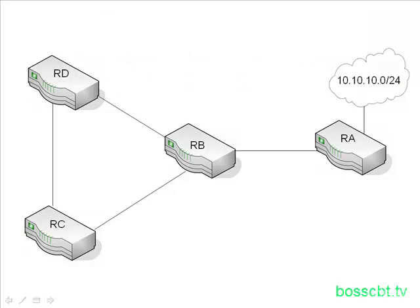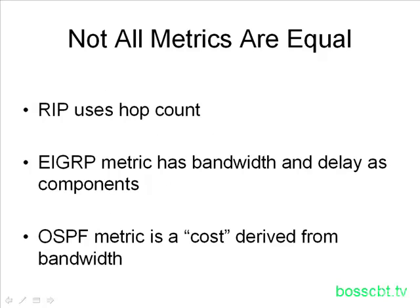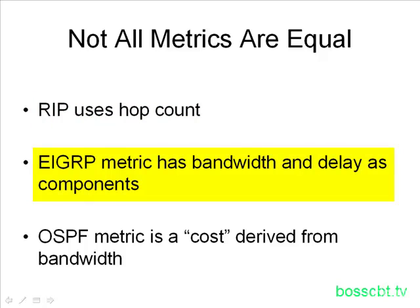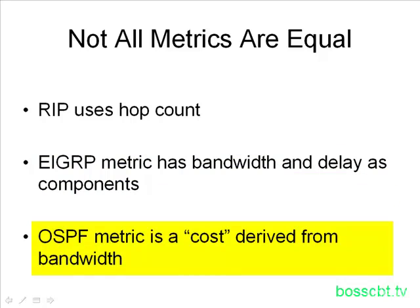Not all metrics are equal between routing protocols. Comparing the three protocols mentioned: RIP uses hop count; EIGRP's metric is based on a few different components, two of which are bandwidth and delay — completely different from hop count; and OSPF uses a cost derived from the bandwidth of the different links involved. You can see they're completely different, and it's very hard to compare them because they don't use the same basis of measurement for their metrics.